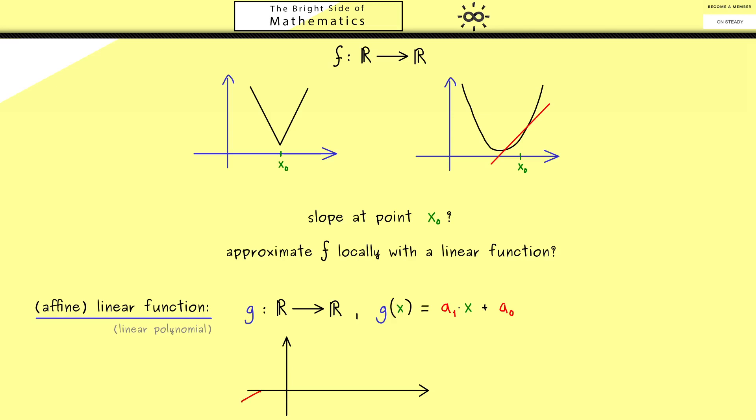Now of course this is the important ingredient we need for the approximation of a function f. By changing the constant a₀ we would just shift the function up and down. For this reason we don't have a problem changing the expression a little bit when we want to fix a point x₀ on the x-axis.